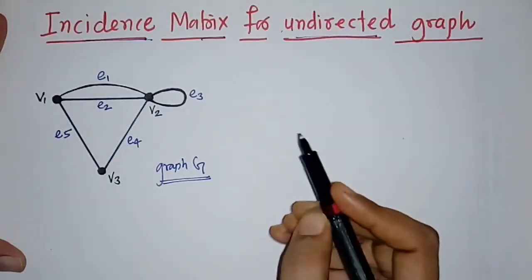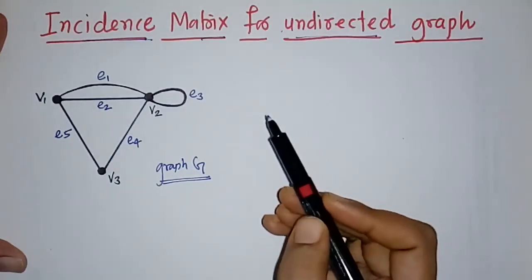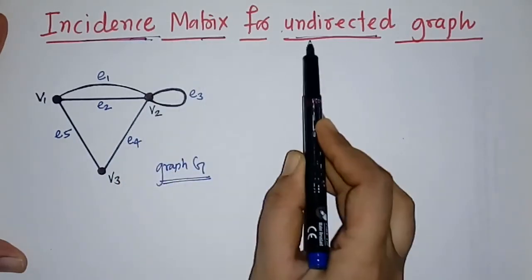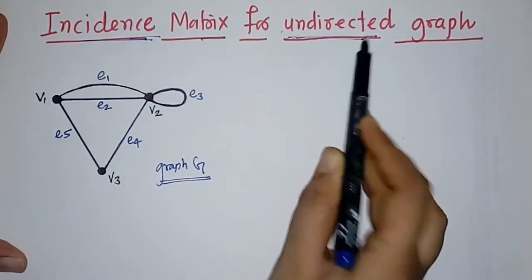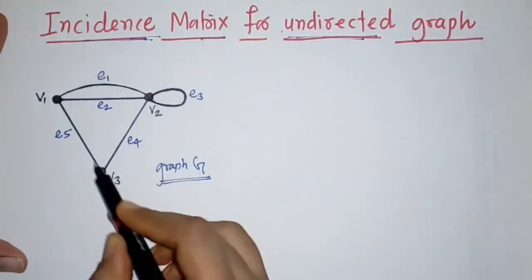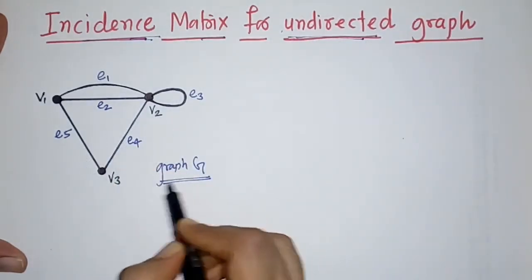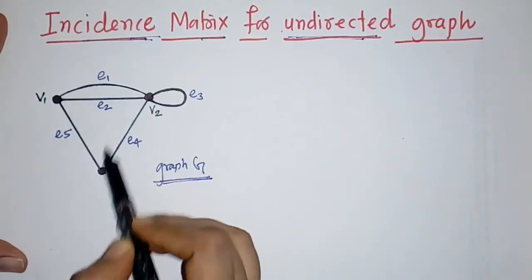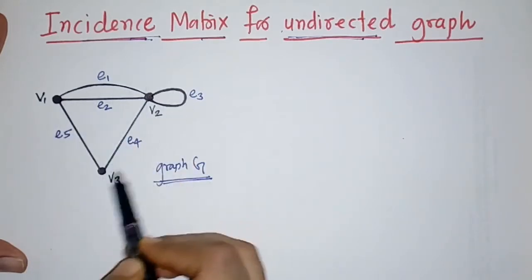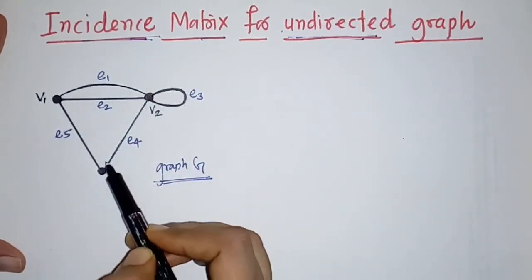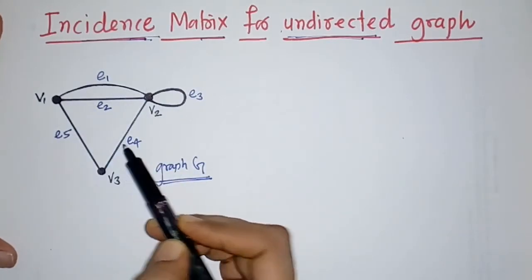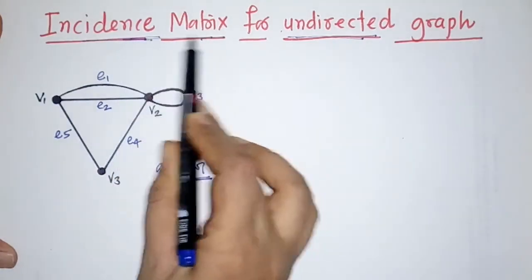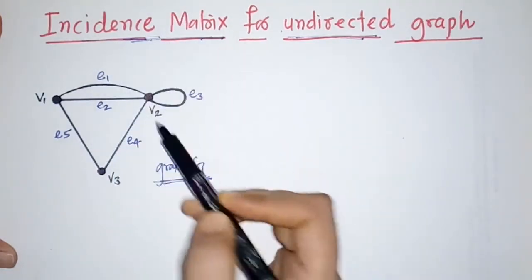Hello everyone. Today we are going to see the incidence matrix for an undirected graph. Here we have a graph G with three vertices and five edges, and for this we have to represent the incidence matrix.